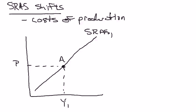Hi everyone. In this video I just want to explain what shifts the short-run aggregate supply curve. Just like the aggregate demand curve is a story about total spending or aggregate expenditures, the short-run aggregate supply curve is a story about cost of production.